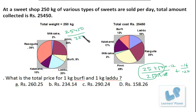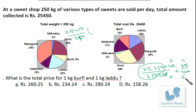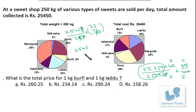So it's 25450 by 250, and it is 12 by 8, which is 4 by 5. Taking the LCM: 5 threes are 15, and 4 twos are 8, so 15 plus 8 is 23 by 10. We cancel the zeros, giving 2545 by 25 into 23. We are not further considering this 10.